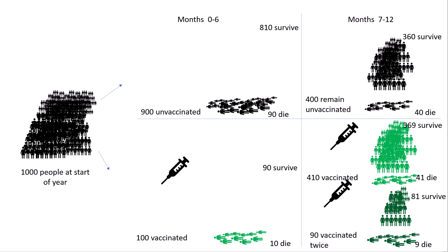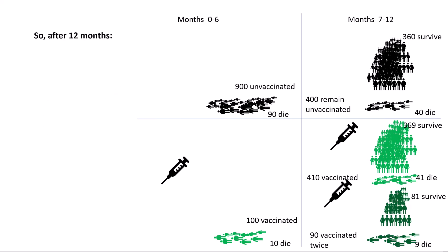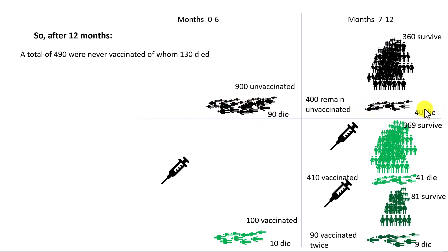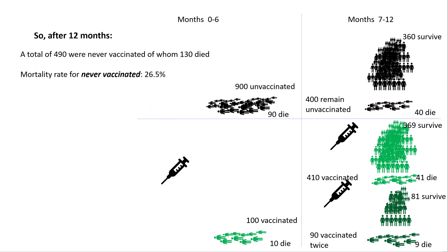Now let's look at the data that we've got after 12 months. We've got a total of 490 who were never vaccinated: the 90 who died in the first six months, plus the 40 who died in the second six months, and the 360 who survived — that's 90 plus 40 plus 360, which is 490. Of those, 130 died (90 plus 40). So the mortality rate for the never vaccinated is 26.5% — that's just 130 divided by 490.